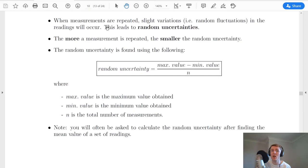We'll now have a look at random uncertainty. When measurements are repeated, slight variations or random fluctuations in the readings will occur. So if you were to take many measurements of something, chances are you're never going to get quite the same result every time. And this leads to random uncertainties. And just a reminder that the more a measurement is repeated, the smaller the random uncertainty becomes.